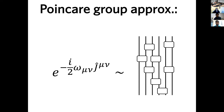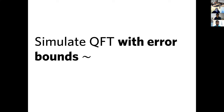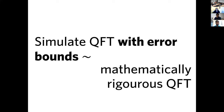The Poincaré group contains translations in space but also in time, so simulating the Poincaré group is as hard as simulating the temporal dynamics according to the Schrödinger equation — but of course much harder, since you're demanding you can also simulate boosts and rotations. The goal is to produce a quantum circuit on a digital representation of the quantum field state and give error bounds: to say this simulation worked to this error. That brings us to the statement: simulating QFT with error bounds probably requires a mathematically rigorous formulation of quantum field theory.